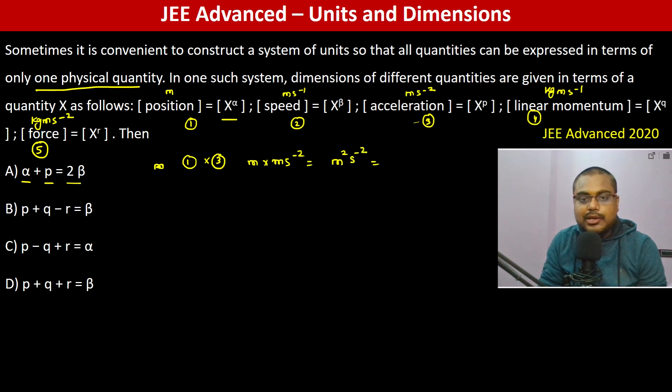Which is actually meter squared per second squared. Meter per second squared is squared, so we can write x to the power alpha into x to the power p equals x to the power beta whole squared. Therefore alpha plus p equals 2 beta. Yes, this checks out.